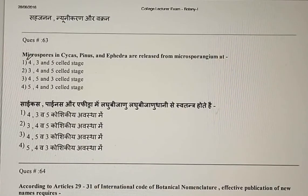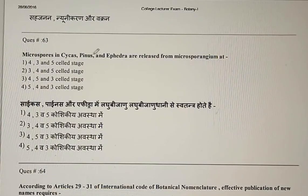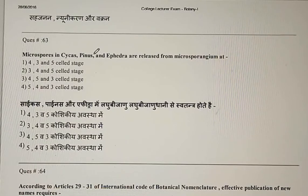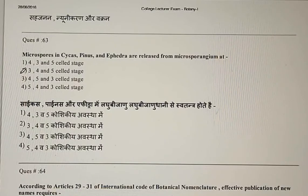Question 63: Microspores in Cycas, Pinus, and Ephedra are released from the microsporangium at which cell stage? In Cycas the microspores are released at the 3-cell stage, in Pinus at the 4-cell stage, and in Ephedra at the 5-cell stage. The correct answer is the second option.